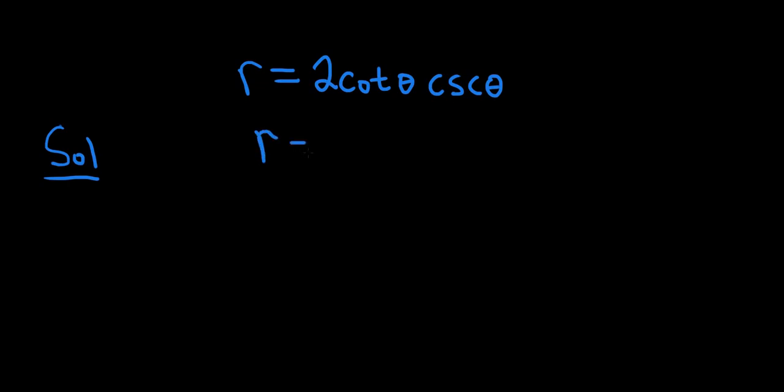So r equals 2 times, cotangent is 1 over tangent, and cosecant is 1 over sine.